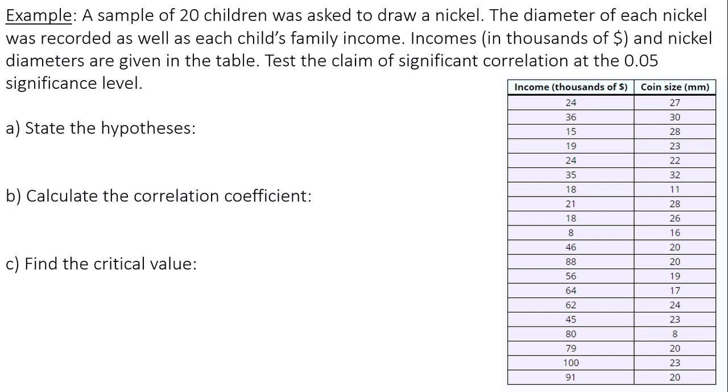First thing we're going to start off with is we're going to state our hypotheses. For any hypothesis test that deals with correlation, the null hypothesis is always ρ, this is our population correlation coefficient, is equal to zero. And the alternative hypothesis is ρ is not equal to zero. What this top hypothesis is saying is there is no correlation. And what this alternative hypothesis is saying is there is correlation.